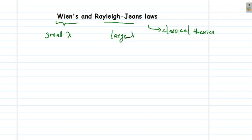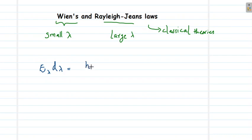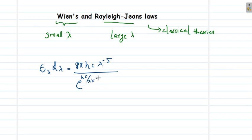Similarly, Rayleigh-Jeans law was successful in explaining the spectrum of black body radiation at large values of wavelength, but neither of these theories could successfully explain the black body radiation spectrum fully. It was in this context, when classical theory failed to account for the problem, that quantum theory was developed by Planck. The Planck's law of radiation gives the energy density as: E(λ)dλ = 8πhc · λ⁻⁵ / (e^(hc/λkT) − 1) · dλ.